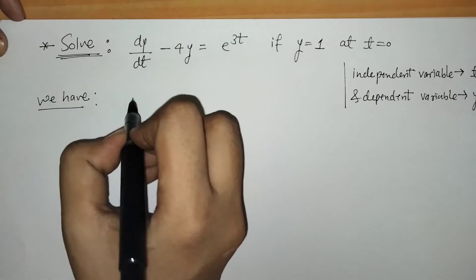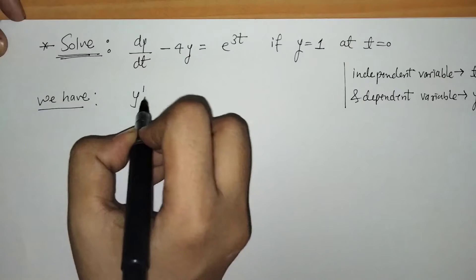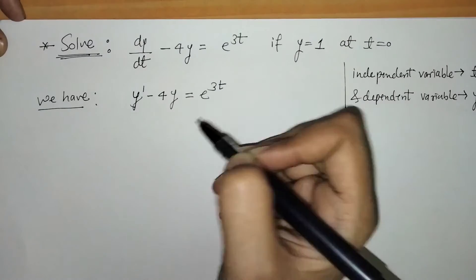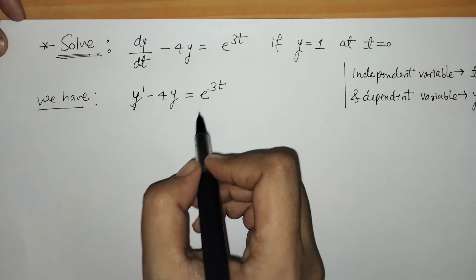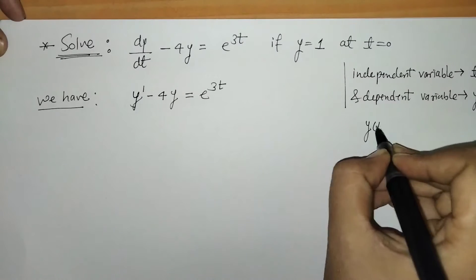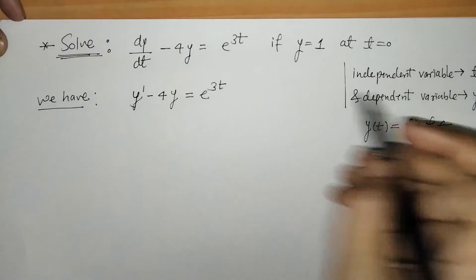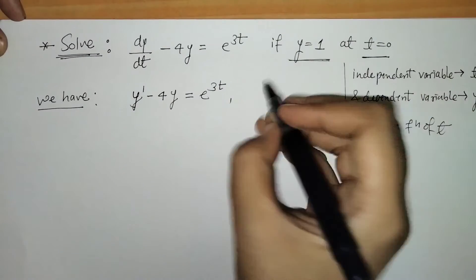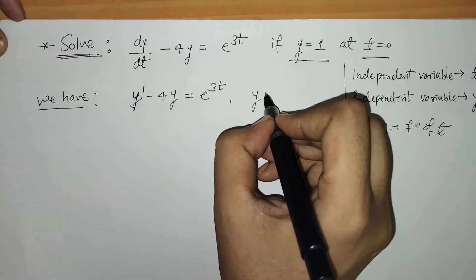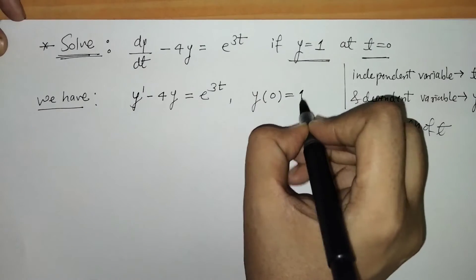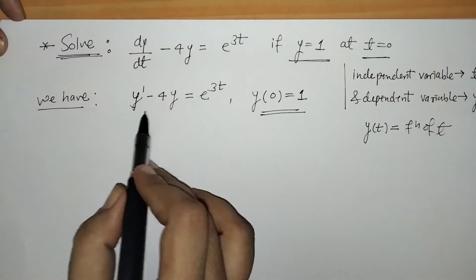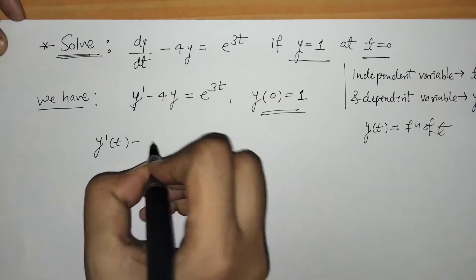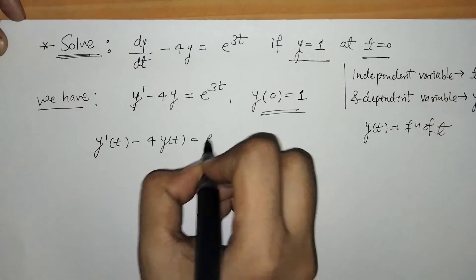We can write this differential equation as y' minus 4y is equal to e raised to 3t. When we solve this differential equation we get a solution in variable t, that means we get one function y of t. The given condition is that y(0) is equal to 1. So we can also write this as y'(t) minus 4y(t) is equal to e raised to 3t.